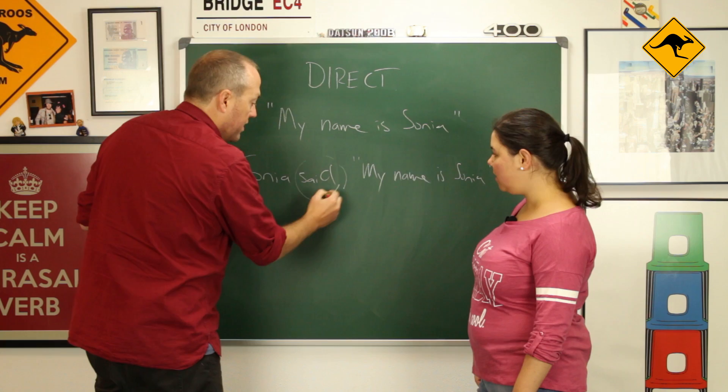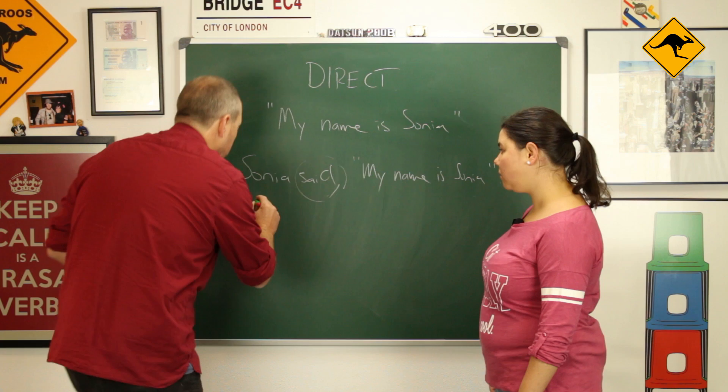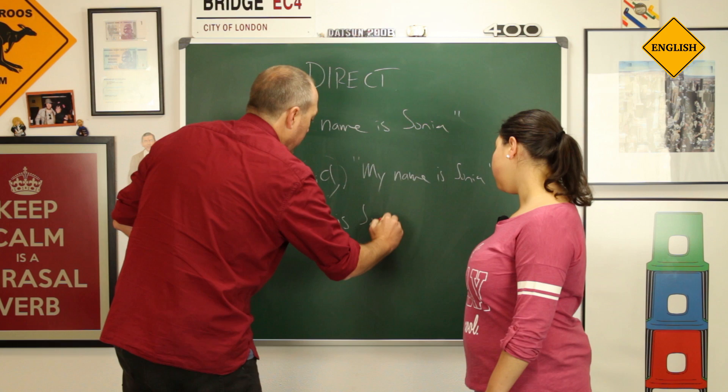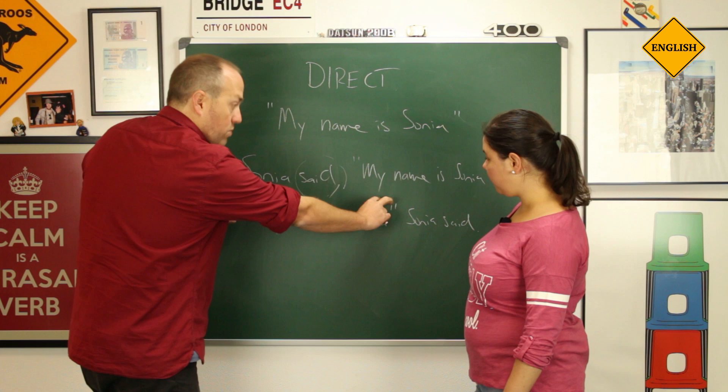You can see we're putting the reporting verb at the front and using a comma — though the comma is optional. We could also put the reporting verb at the end: 'My name is Sonia,' Sonia said. So you put it at the beginning or the end, and then we use quotation marks. Easy, no problems.